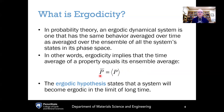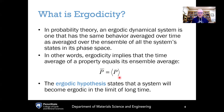The time average is what you get if you take a single system, measure property P repeatedly over time — now, a minute from now, two minutes from now — and take the average of all those measurements, giving you P-bar. The ensemble average instead involves preparing a set of nominally identical systems, measuring each one, and averaging over that ensemble to get the ensemble average, written as P within angle brackets. If the system is ergodic, the time average equals the ensemble average. If non-ergodic, they differ.